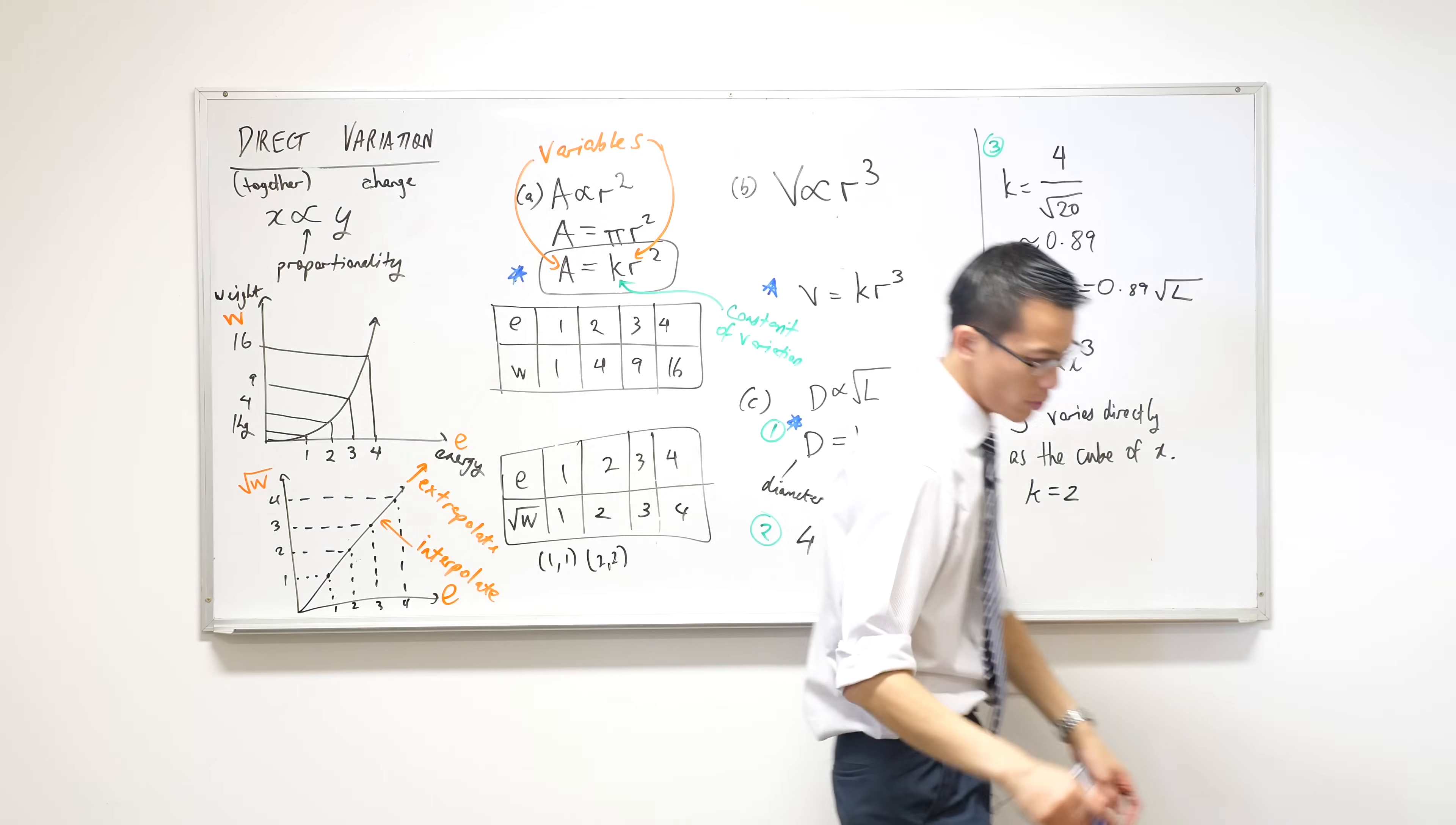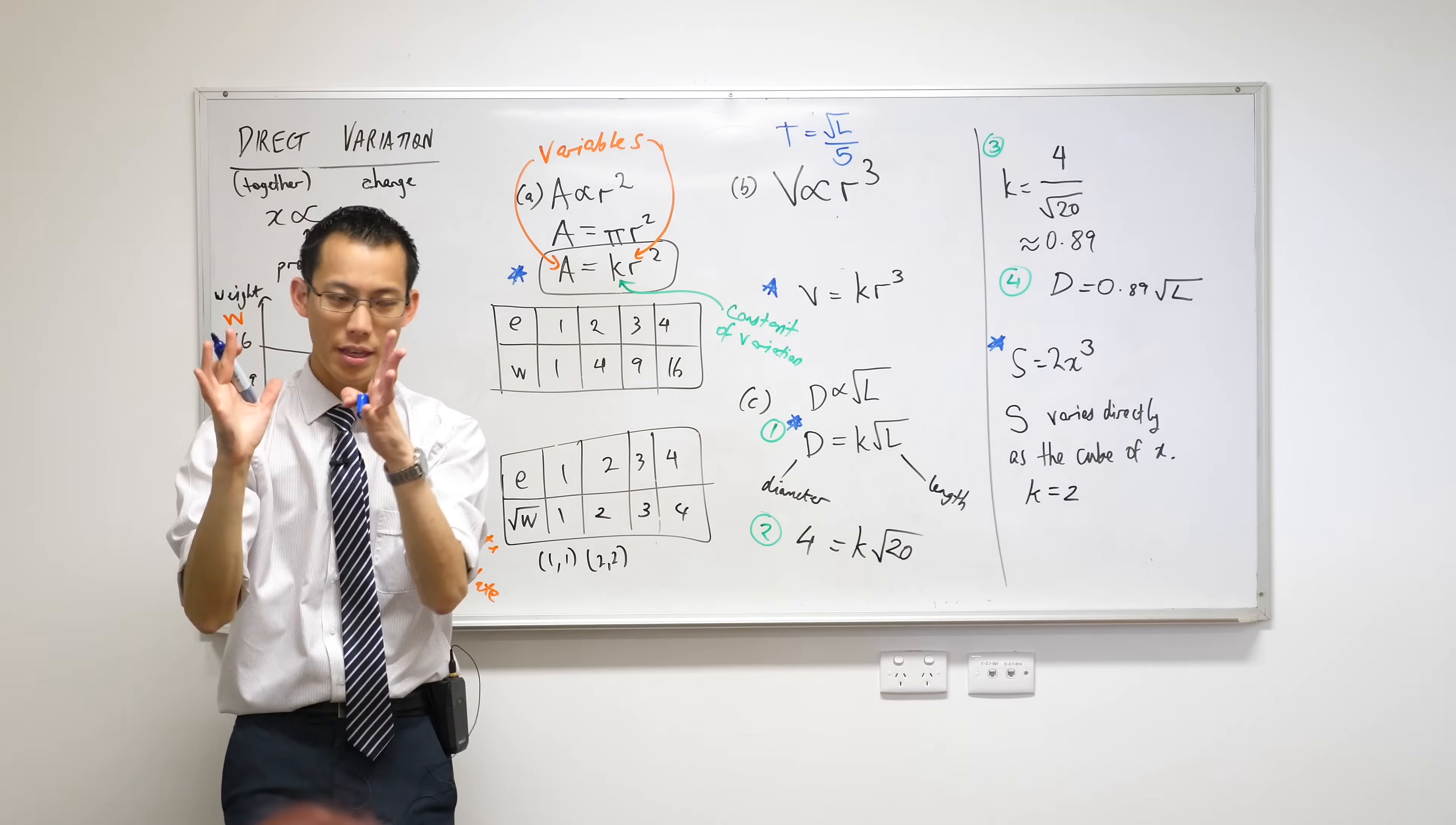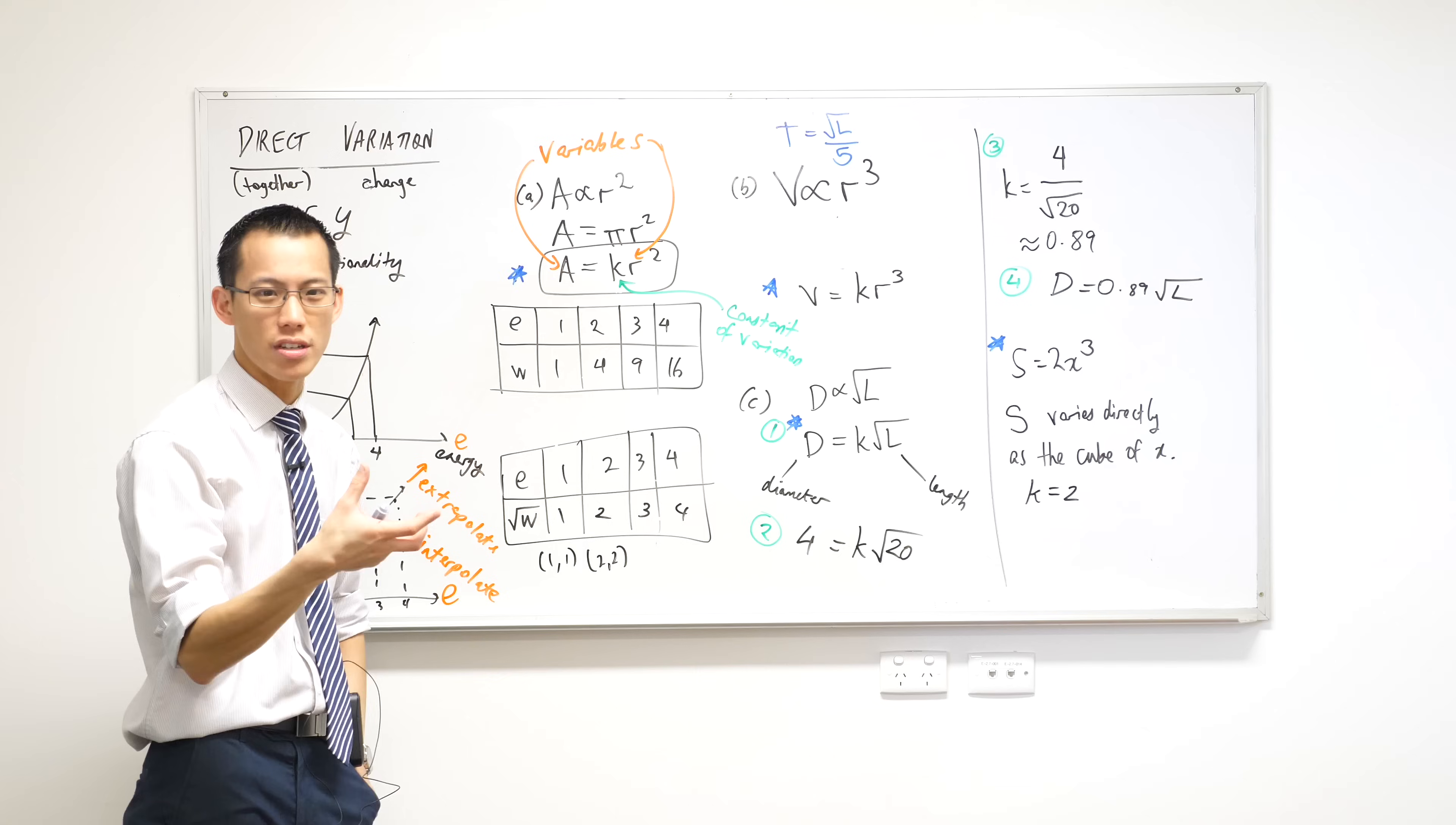So in this equation, what is the equation? T equals the square root of L over five. We need to come up with a way to write this so it is something times the square root of L. So what can we put in its place? How can you turn division into multiplication?